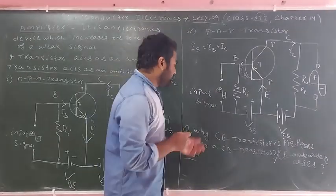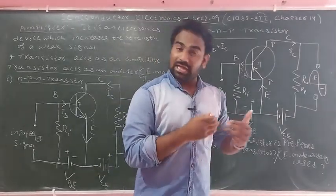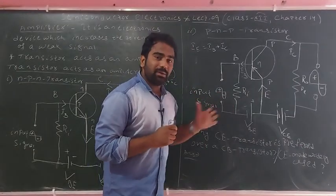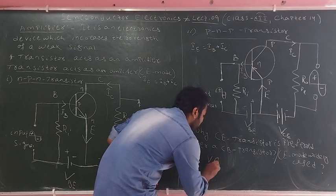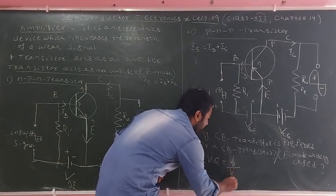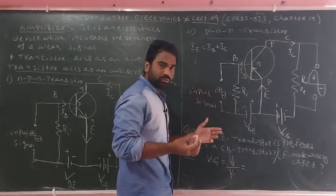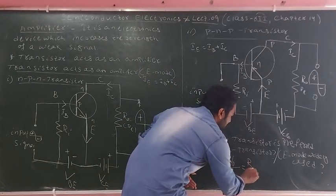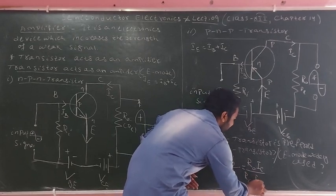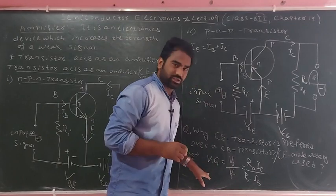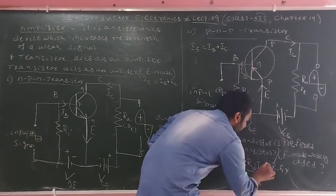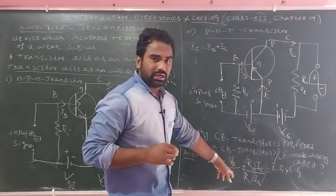Now the important question: why is CE mode preferred over CB mode? Voltage gain is defined as output voltage divided by input voltage. Output voltage equals output resistance multiplied by IC, and input resistance is related to IB. So voltage gain in CE mode equals RO divided by RI, multiplied by the ratio IC over IB, which is the current gain beta. In common base mode the current gain is alpha, which equals IC over IE.